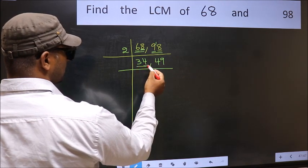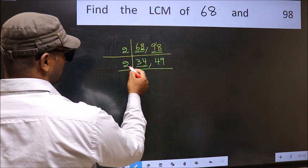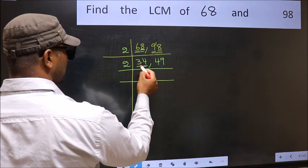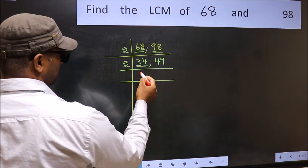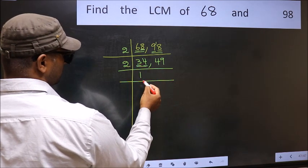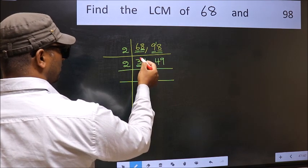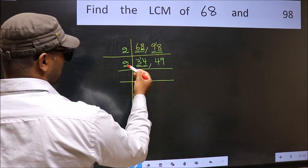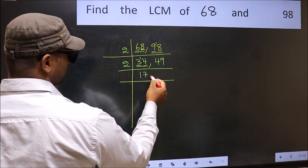Now we have 34. Last digit is 4, which is even, so take 2. The first digit is 3 — a number close to 3 in the 2 times table is 2. So 3 minus 2 is 1, carried forward: 14. When do we get 14 in the 2 times table? 2 times 7 is 14.